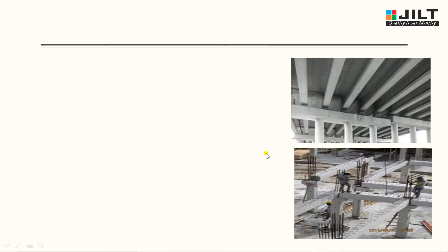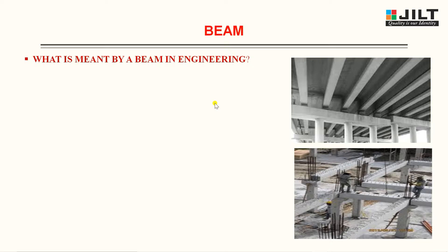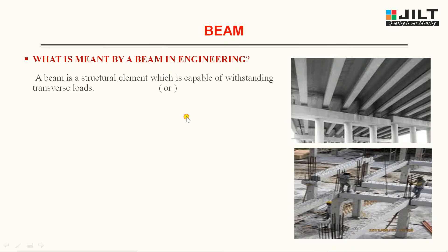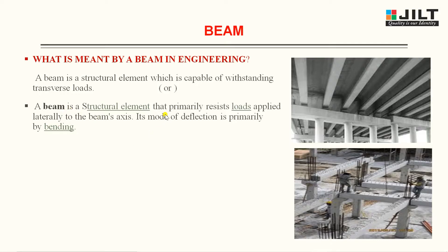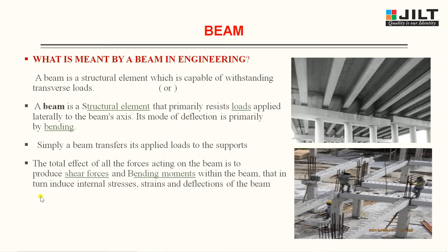Now let us see the definition of a beam. These are examples of beams available — all the horizontal members. A beam is a structural element which is capable of withstanding transverse loads. Or you can also define it as a structural element that primarily resists load applied laterally to the beam axis. Its mode of deflection is primarily by bending. Simply, a beam transfers an applied load to the support. The total effect of all forces acting on the beam is to produce shear forces and bending moments within the beam, which in turn induce internal stresses, strains and deflections.